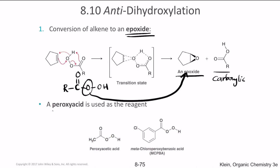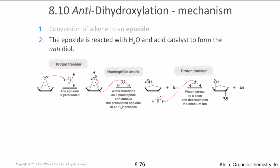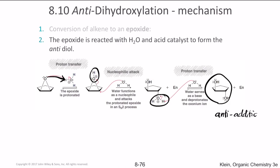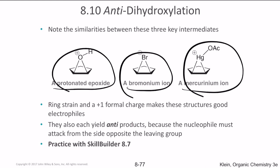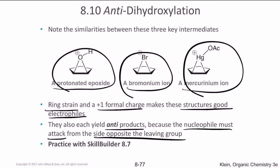The two peroxy acids used are peroxyacetic acid (PAA) and meta-chloroperoxybenzoic acid (MCPBA). The epoxide first undergoes a proton transfer to create an oxonium ion. The oxonium ion is attacked by H2O on the more substituted carbon, resulting in the anti-dihydroxylation product. The similarity between the protonated epoxide, bromonium ion, and mercurinium ion is that ring strain and the positive charge make these structures good electrophiles — the nucleophile must always attack from the side opposite to the leaving group, yielding anti products.